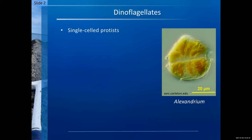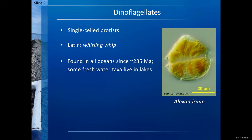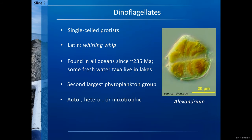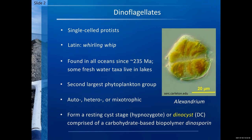I'm going to start by introducing dinoflagellates. Dinoflagellates are single-celled protists — which is Latin for whirling whip because of the flagellum that encircles them. They're found in all oceans from the Triassic. Some are freshwater and some live in lakes as well as the ocean. They are the second largest phytoplankton group, the first being diatoms. They are auto-, hetero-, and myxotrophic. Most importantly for my work, they form a resting cyst stage or hypnozygote, also known as a dynocyst, comprised of a carbohydrate-based biopolymer called dinosporins.